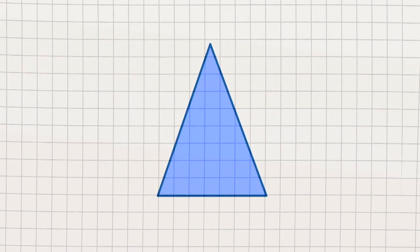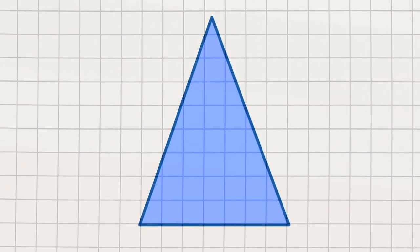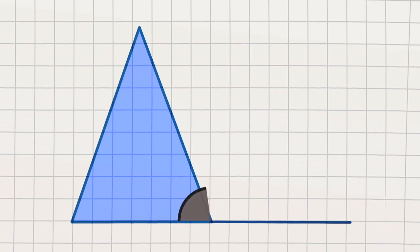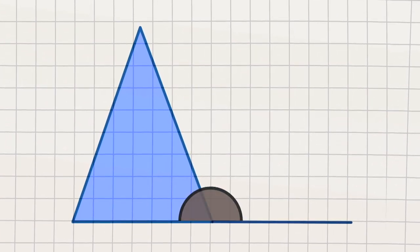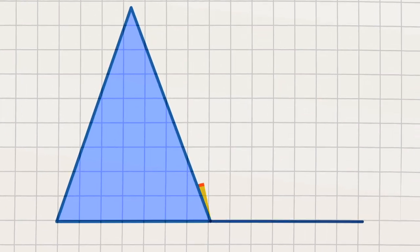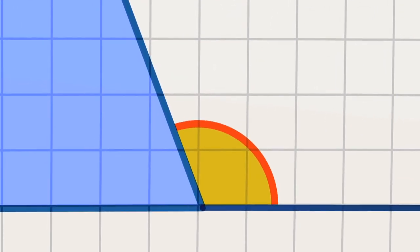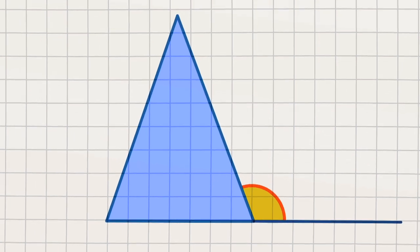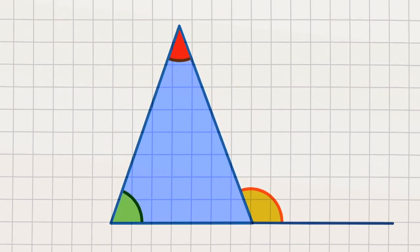We're gonna start with a shape we know, like a simple triangle that's ready to go. We could then introduce a straight line, that we know makes 180 degrees every time. Now if we wanna find an exterior angle, we're looking at the measurement outside the triangle.